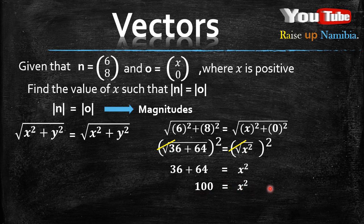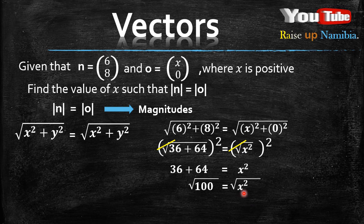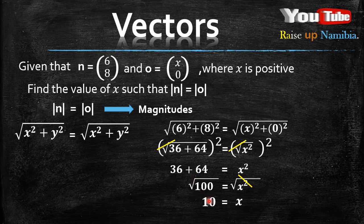36 plus 64 gives us 100, so x squared equals 100. To isolate x, we introduce the square root on both sides: the square root cancels the square on the right giving x, and the square root of 100 is 10. Because the question specifies x is positive, x equals positive 10, and that's your final answer.